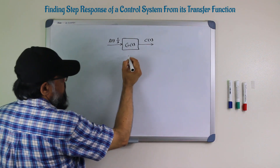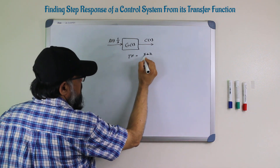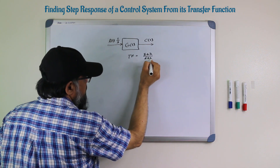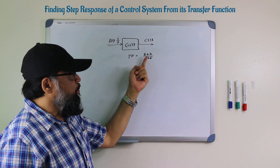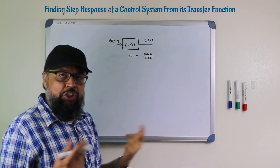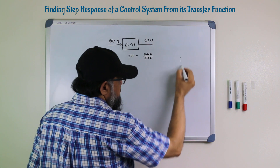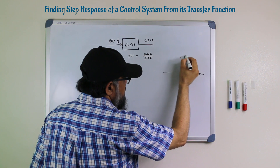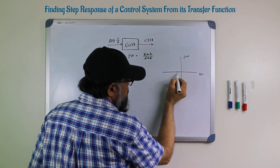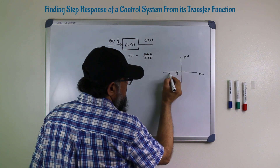The system has a transfer function equal to (s plus 2) divided by (s plus 5). This is a simple first-order system which has a pole at minus 5 and a zero at minus 2. If you plot this on the sigma-jω plane, there is a zero at minus 2 and a pole at minus 5.